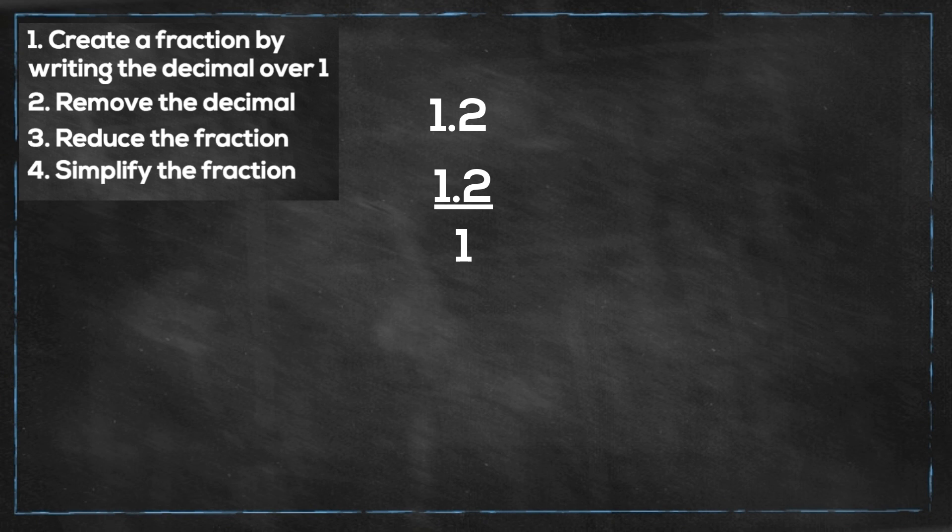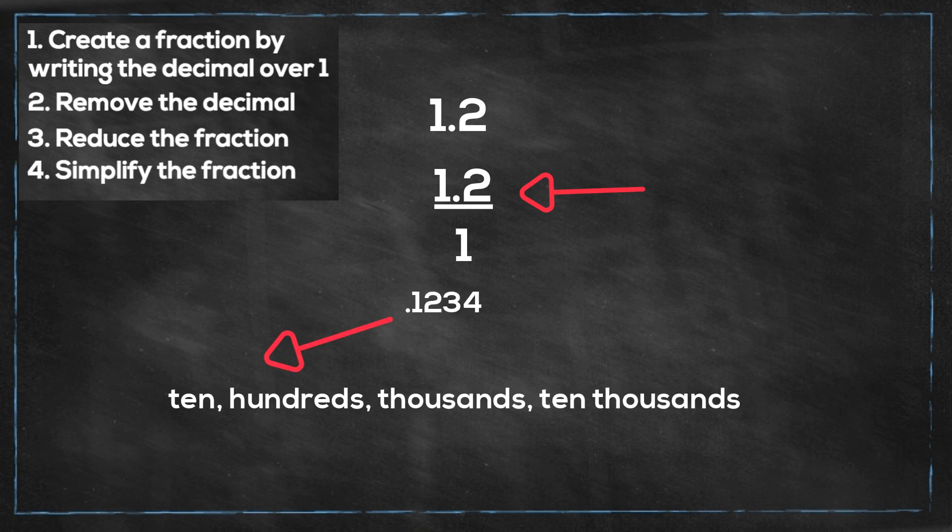We will look at the numbers to the right of the decimal and then count the number. Remember, decimals go like this. The first number are tenths, second are hundredths, third are thousandths, then ten thousandths, etc.